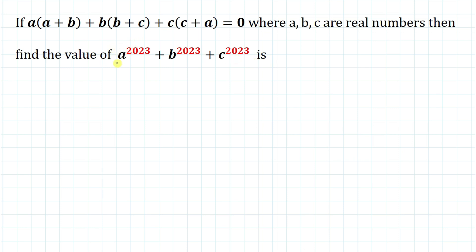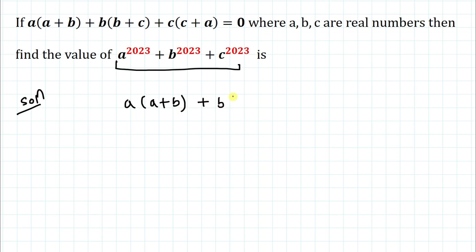We have a given equation and we are asked to find the value of the given expression. Please subscribe to my channel and click the bell icon for more such interesting videos. Without any delay, let's start the solution. We have a(a+b) + b(b+c) + c(c+a) = 0.